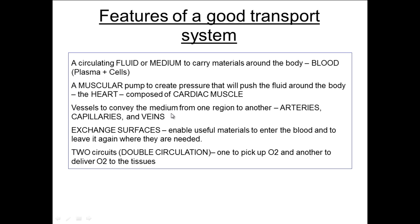and you're also going to need vessels to carry the medium from one area to another. Most importantly, the exchange surfaces need to be able to allow transfer of nutrients in both directions — the useful materials need to be able to enter and you also need to be able to get rid of the waste materials as well. And obviously having a transport system with two circuits is a much more efficient way of transporting those nutrients around the body.